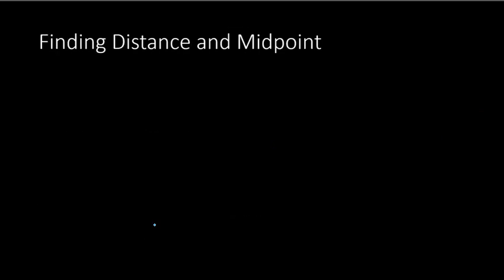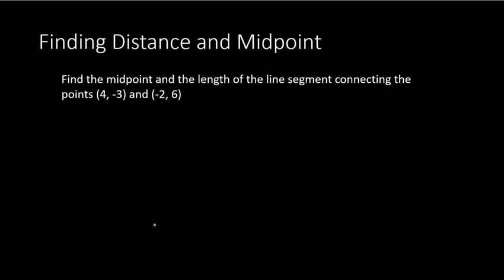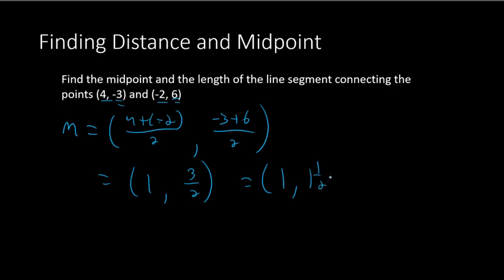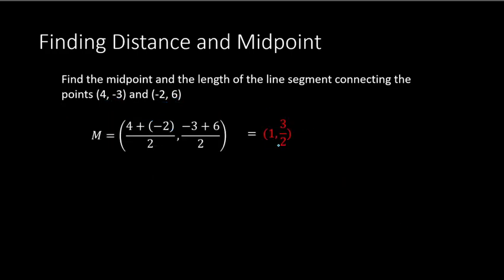Let's try an example. Given the two points (4, -3) and (-2, 6), we'll find the midpoint first. The midpoint is found by averaging the x's: 4 plus negative 2 divided by 2 gives the x value. Averaging the y's: negative 3 plus 6 divided by 2. That gives us 2 over 2 equals 1, and 3 over 2 equals 1.5. So the midpoint is (1, 1.5).